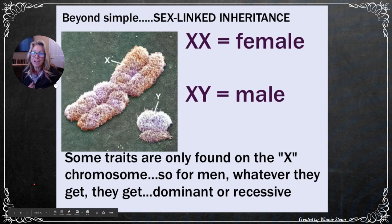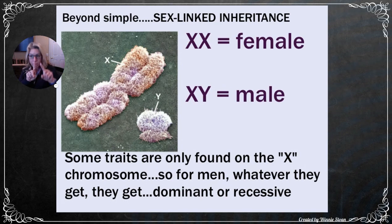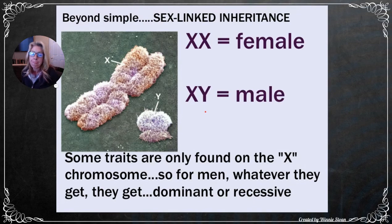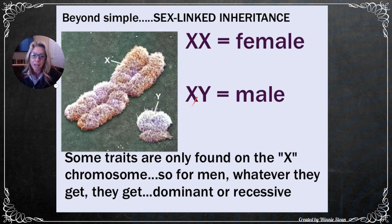Another exception to the rule: sex-linked inheritance. For biological females, the 23rd pair is two X chromosomes — a homologous pair, one from mom and one from dad. For biological males, the 23rd pair is one X (from mom) and one Y (from dad). These two chromosomes don't have the same genes, so they are not homologous. Males have only one shot at their X chromosome — whatever X mom gave them.